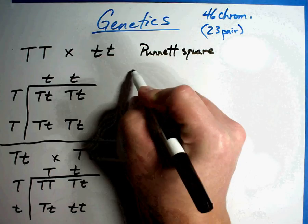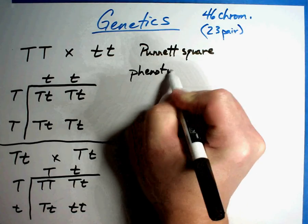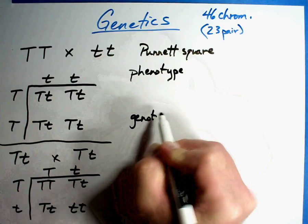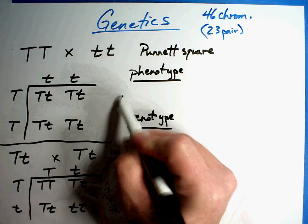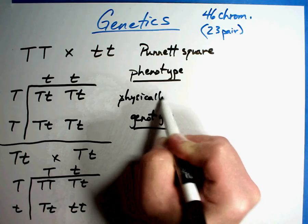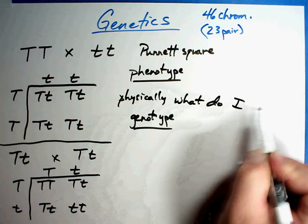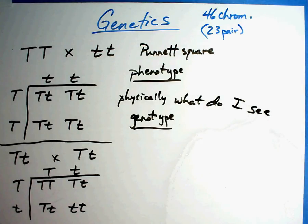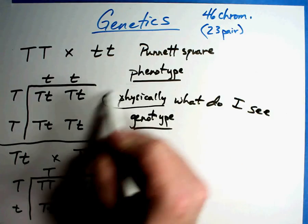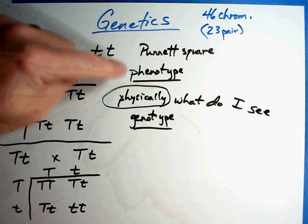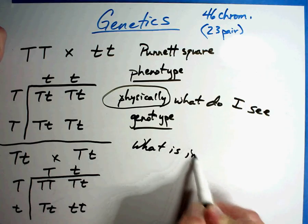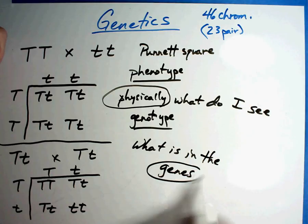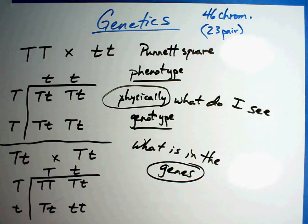This is because of two terms: phenotype and genotype. Phenotype — physically, what do I see? That's what phenotype is: physically, what do I see? I use that word because phenotype and physically start the same way. Genotype, on the other hand, is what is in the genes. Take a second to make sure you get both these definitions because we're going to apply them.